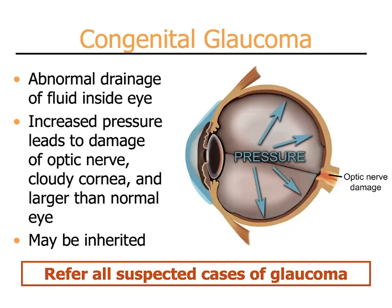Glaucoma is high pressure inside the eye. In congenital glaucoma, this is usually from a birth defect where fluid is being formed inside the eye but is not leaving through normal channels. This increased pressure leads to damage of the optic nerve, clouding of the cornea, and an eye that appears larger than normal. Sometimes this occurs in other family members as an inherited condition. Always refer all suspected cases of glaucoma.